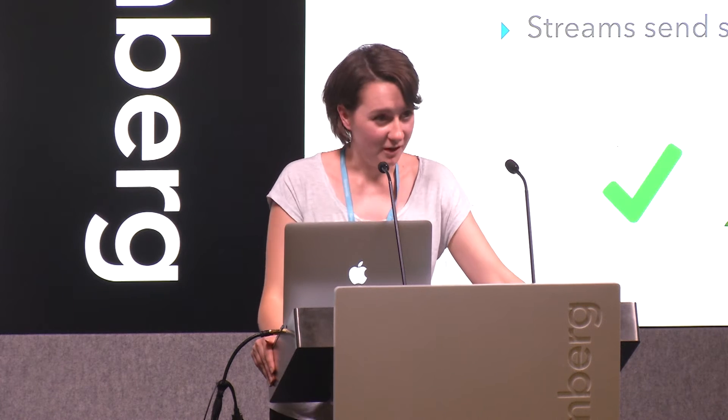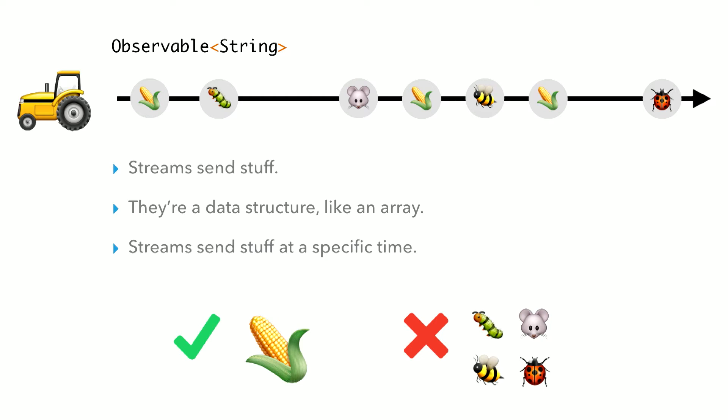Some of these events are corn, which it wants to take and store. And some of them are various creepy crawlies that you probably don't want to end up in your bread. We've been given the task of filtering out events that aren't corn as the tractor goes around. So we're going to use Rx, because Rx deals well with events as they come through.